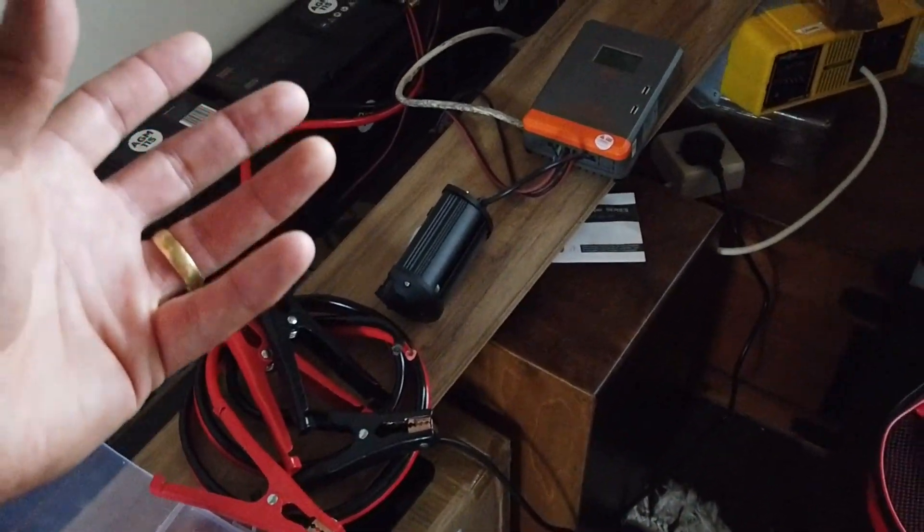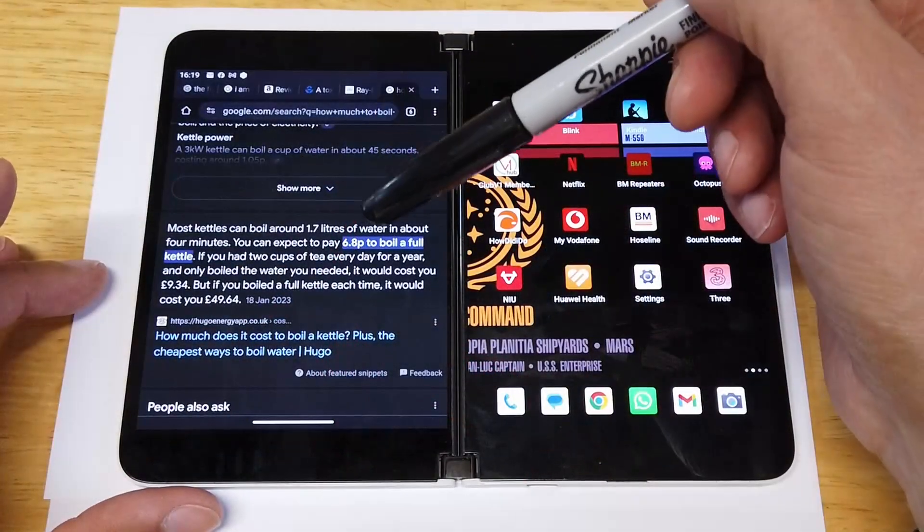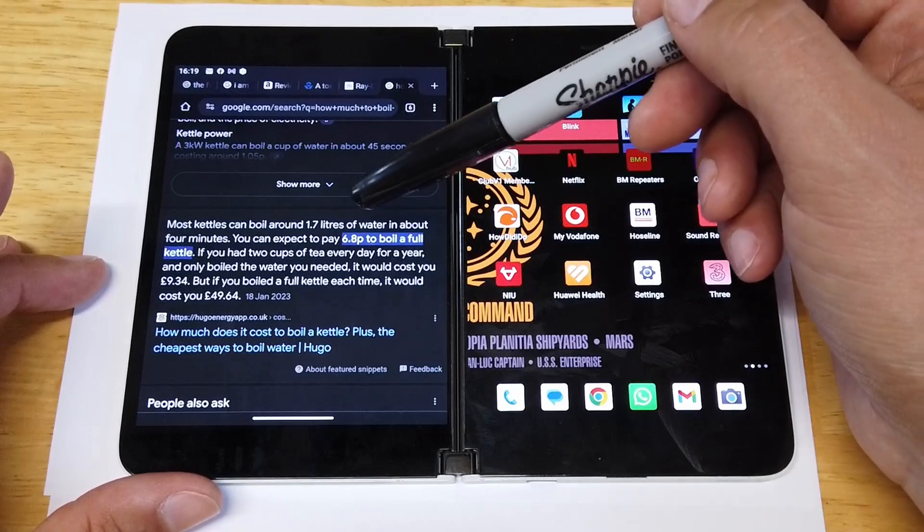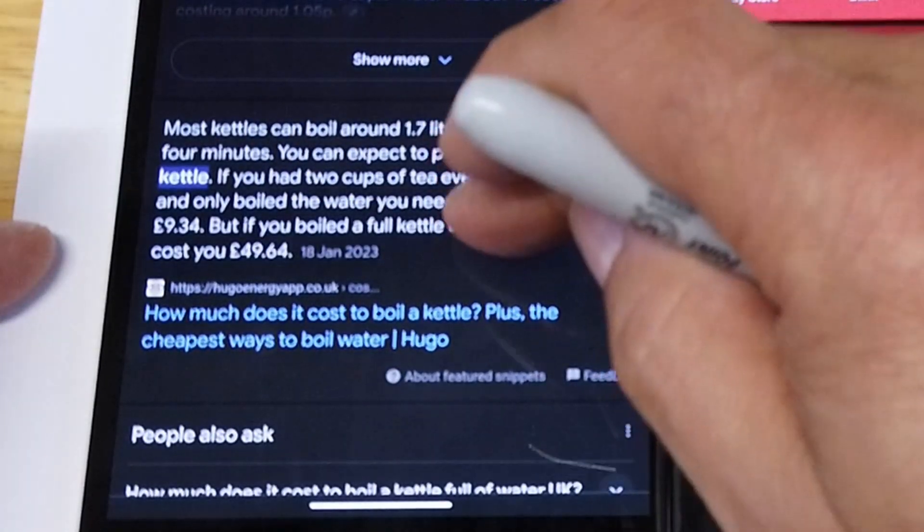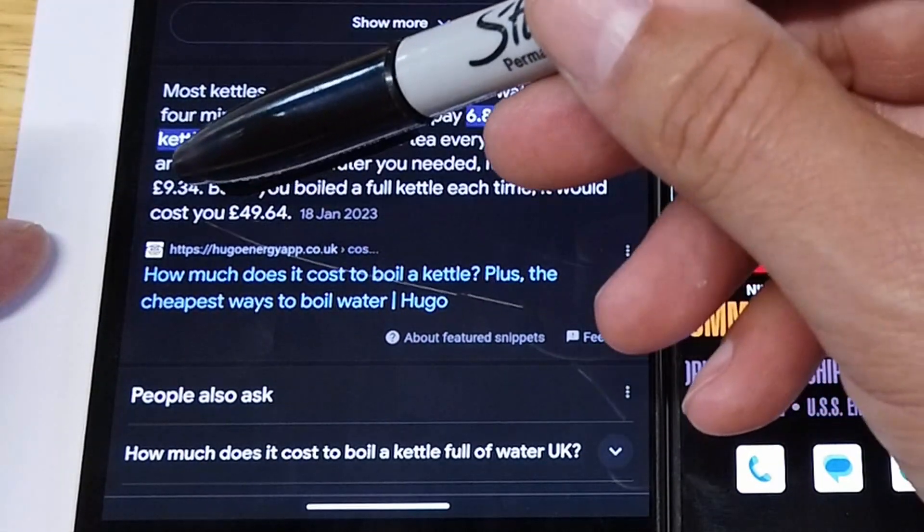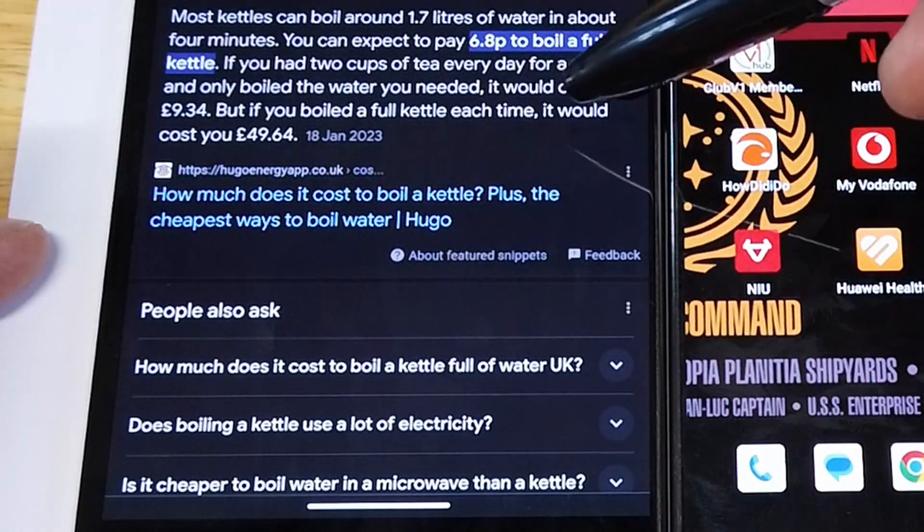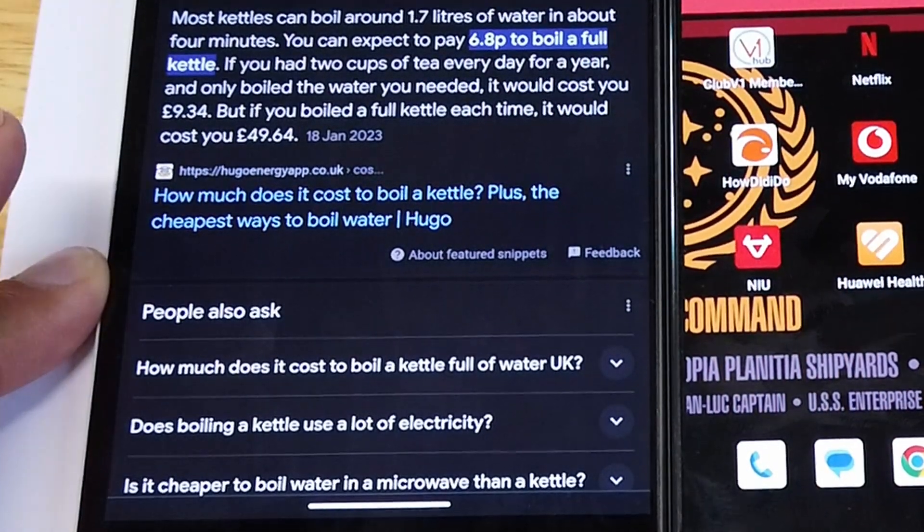What's the payback going to be on this? Just for fun I typed into Google: how much does it cost to boil a kettle? 6.8 pence to boil a full kettle. But really we don't use it like that. So if you only boil the water you needed, it's 9 pounds 34, around a tenner. But if you boiled a full kettle each time it would cost you nearly 50 pounds, 49 pounds and 64 pence.